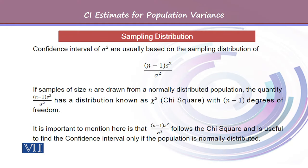Confidence intervals of sigma squared are usually based on the sampling distribution of (n-1)s²/σ², where n is the sample size, s² is the sample variance, and σ² is the population variance. If samples of size n are drawn from a normally distributed population, the quantity (n-1)s²/σ² has a distribution known as chi-square with degrees of freedom n-1.